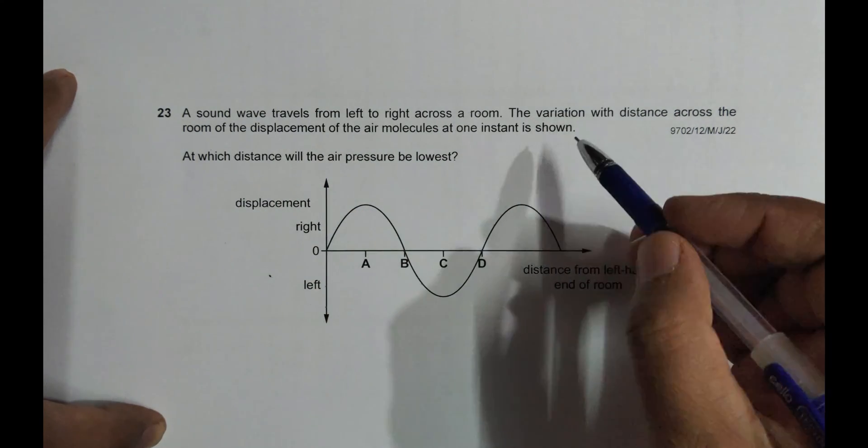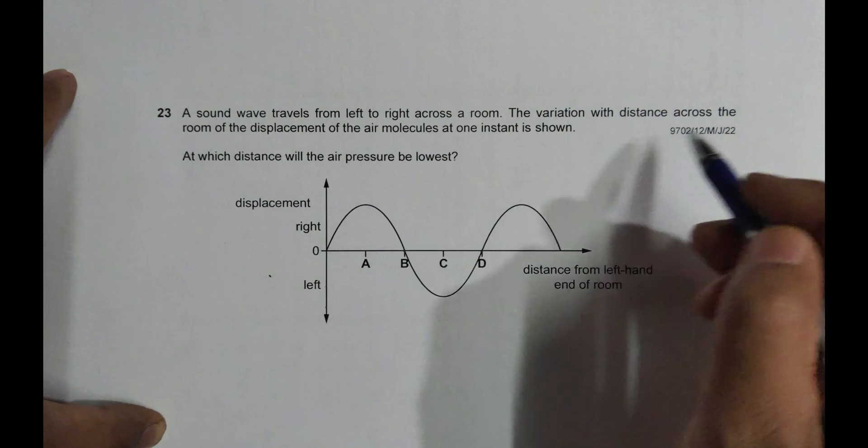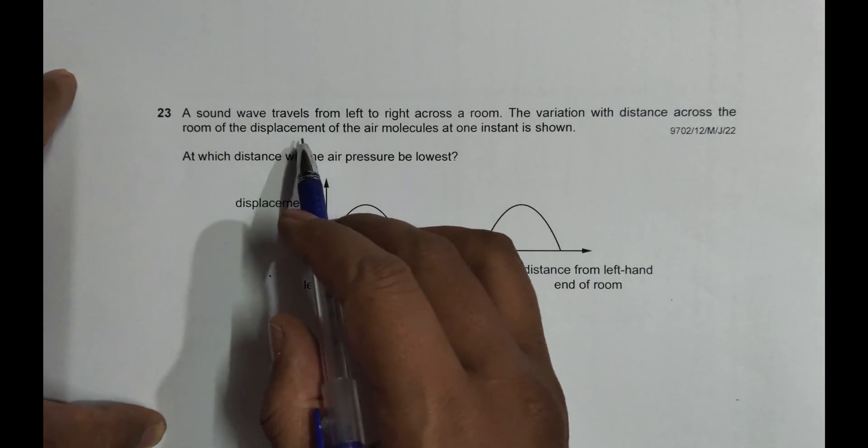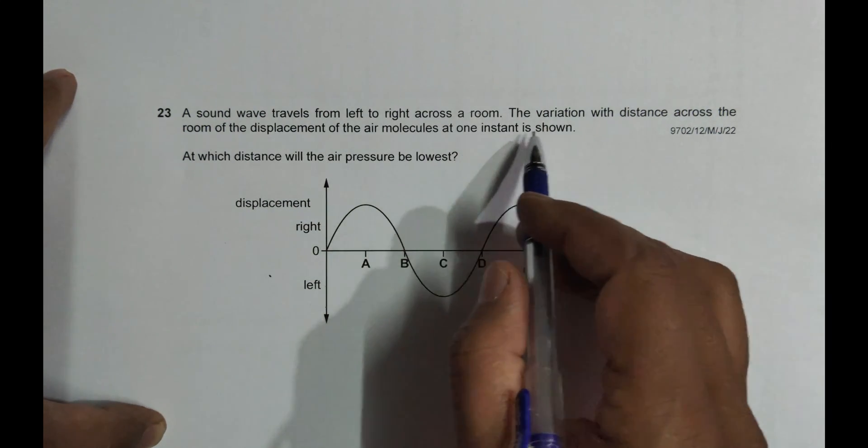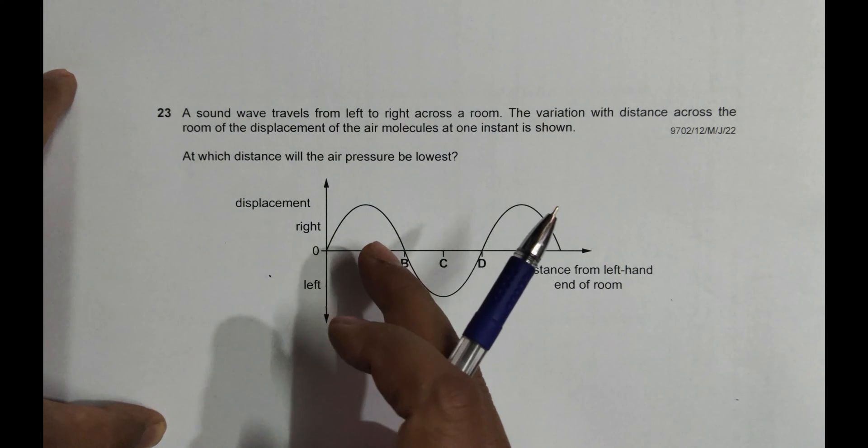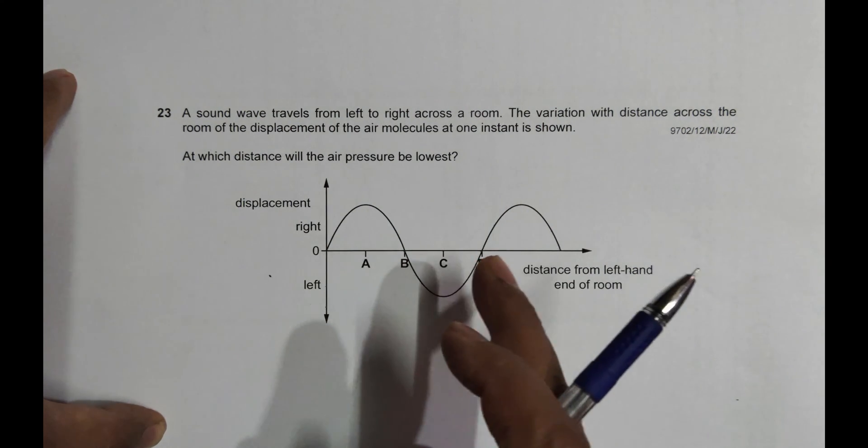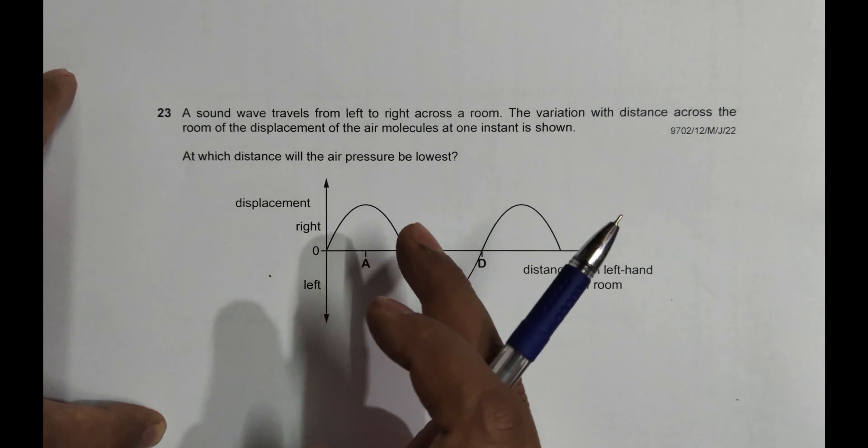across a room, left to right. The variation with distance across the room of the displacement of air molecules at one instant is shown. So this graph shows the variation of displacement against distance. Let us be aware of the fact that sound waves are longitudinal.